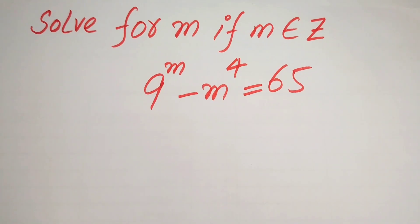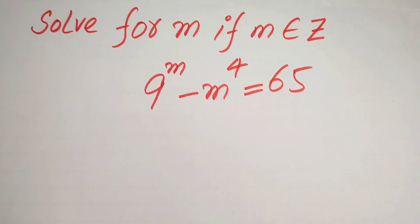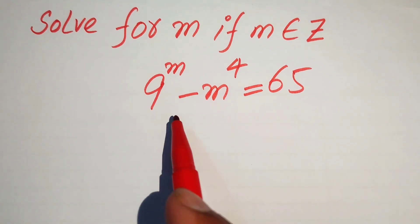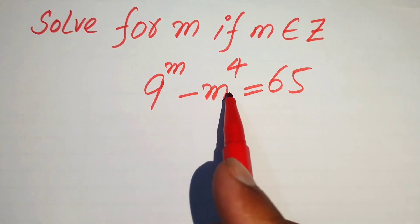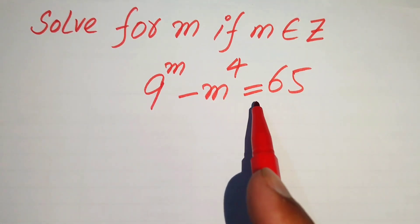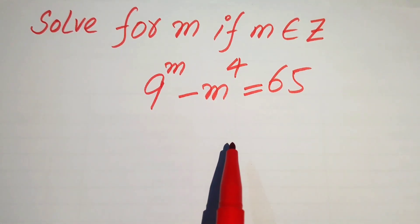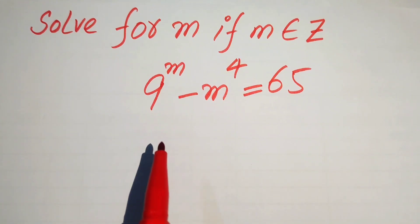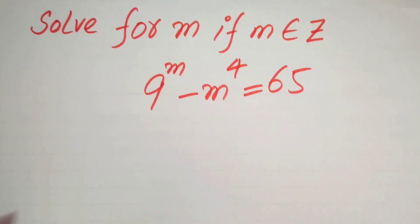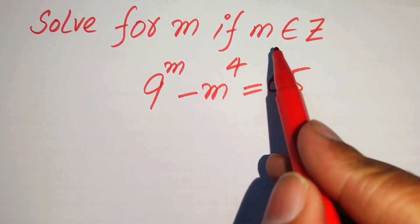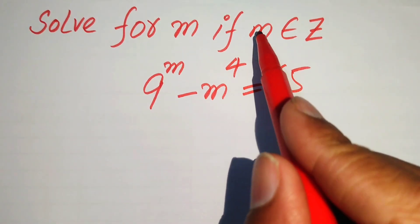Hello everyone. How to solve this nice exponential equation problem: find the values of m if we have 9 to the power of m minus m to the power of 4 equals 65. We solve this problem for the integer values of m.